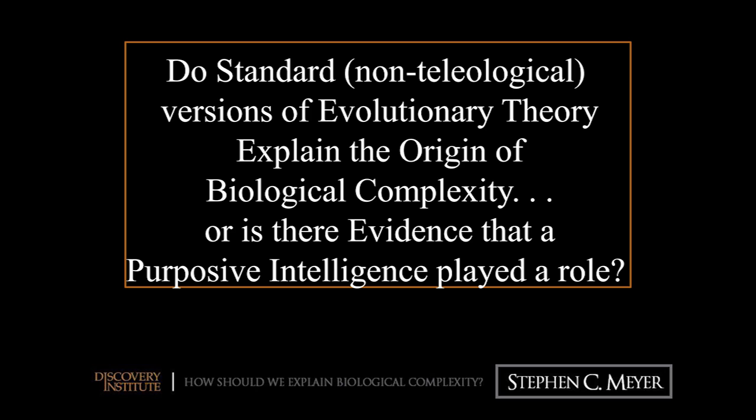I want to open today by framing my remarks relating to the discussion that will follow. We're going to be talking about the origin of complexity. So here's a question: do standard, non-teleological — i.e., materialistic — versions of evolutionary theory, such as those that Richard Dawkins represents, explain the origin of biological complexity? Or is there evidence that a purposeful intelligence played a role?